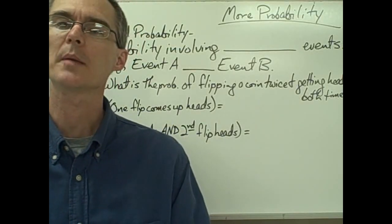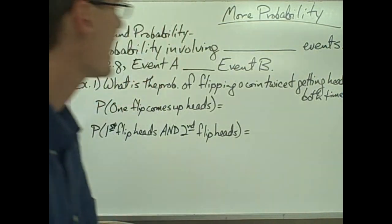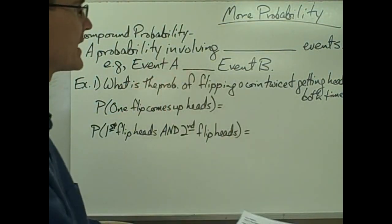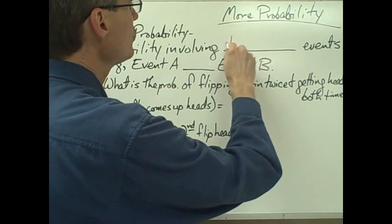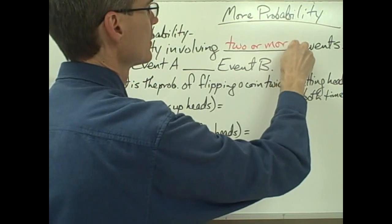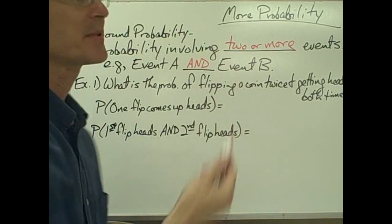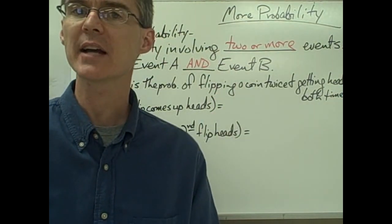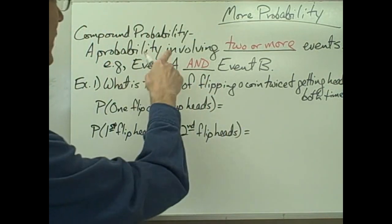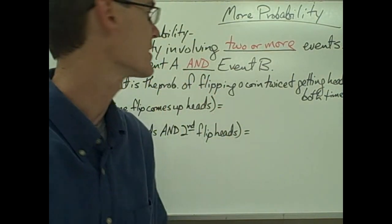In this video, we're going to talk a little bit more about probability, and we're going to start out by talking about something called compound probability. A compound probability is just a probability involving two or more events — for example, event A and event B. So up to now, all the probabilities we've been calculating are just the probability of one thing happening. Now we're getting ready to talk about the probability that two or more events will happen.